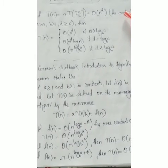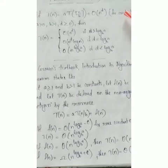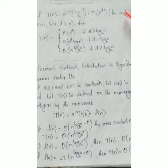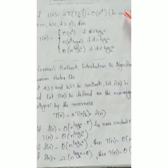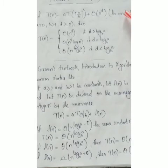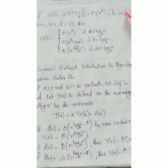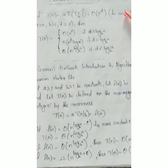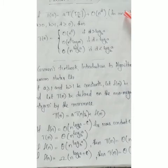One thing is: if f of n is Big O of n raised to log a to the base b minus epsilon, then f of n is asymptotically smaller than n raised to log a to the base b. That gives T of n equals Theta of n raised to log a to the base b.